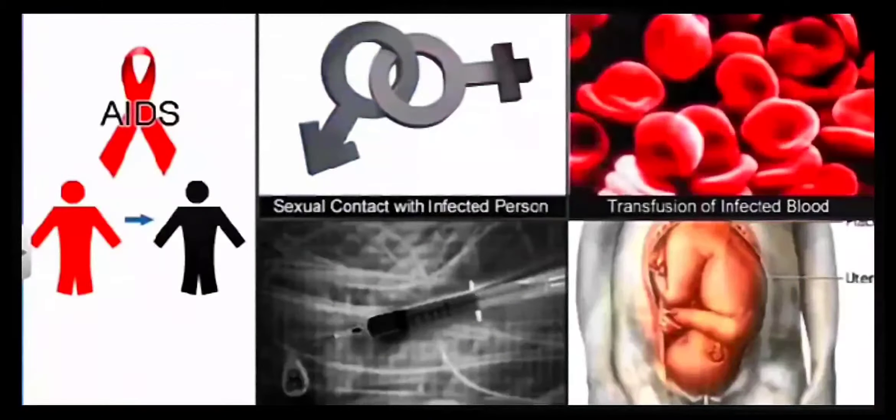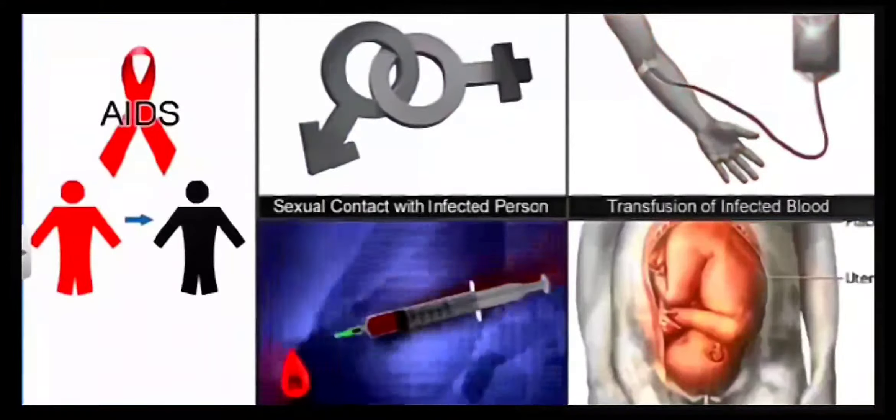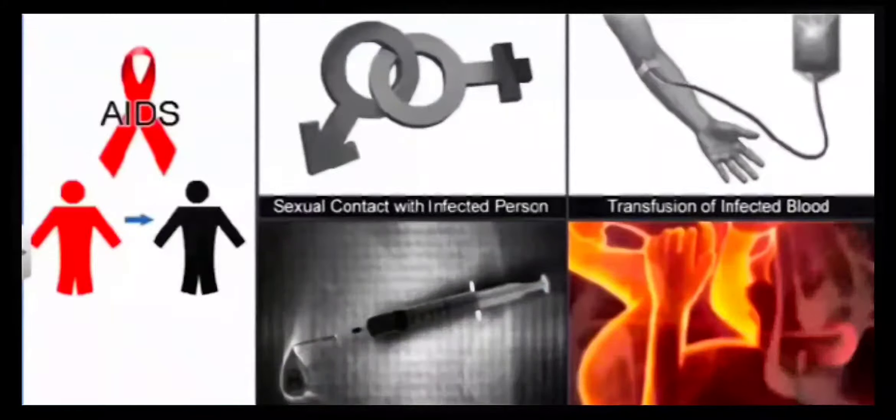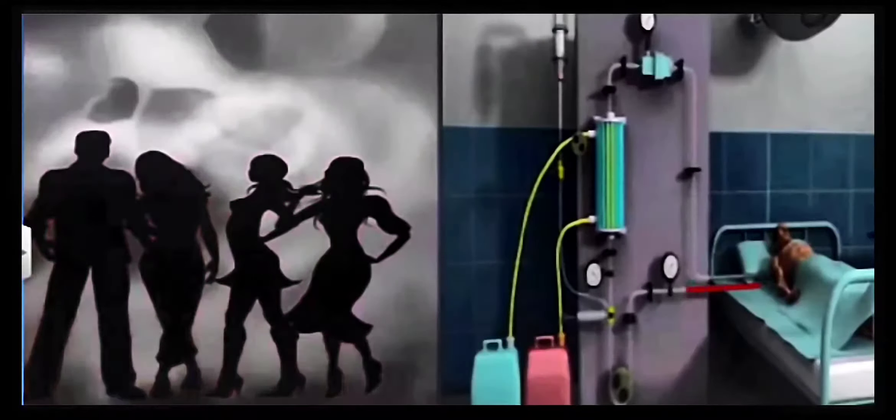This disease spreads with sexual contact with an infected person, transfusion of infected blood, sharing of infected needles, and from an infected mother to the fetus. The most susceptible people are those who have multiple sexual partners, or people suffering from diseases like thalassemia where regular blood transfusion is required.